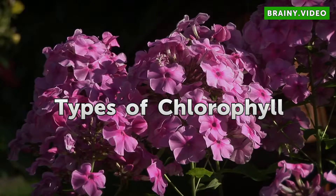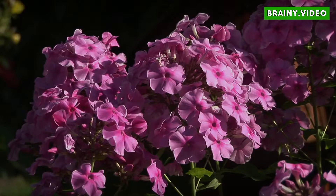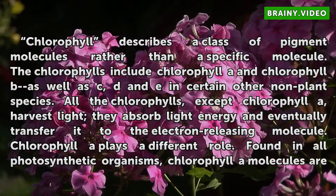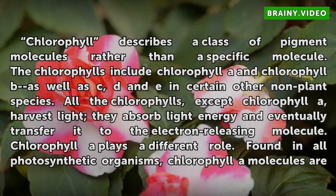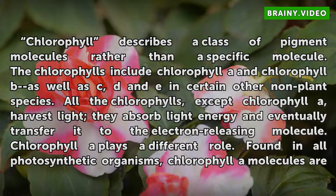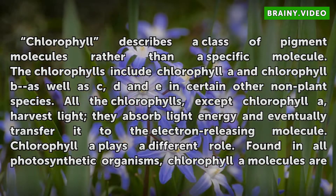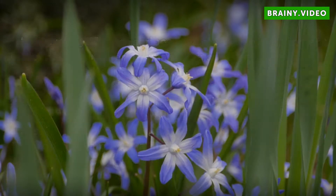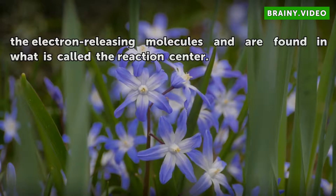Types of Chlorophyll. Chlorophyll describes a class of pigment molecules rather than a specific molecule. The chlorophylls include chlorophyll A and chlorophyll B, as well as C, D and E in certain other non-plant species. All the chlorophylls, except chlorophyll A, harvest light — they absorb light energy and eventually transfer it to the electron-releasing molecule. Chlorophyll A plays a different role. Found in all photosynthetic organisms, chlorophyll A molecules are the electron-releasing molecules and are found in what is called the reaction center.